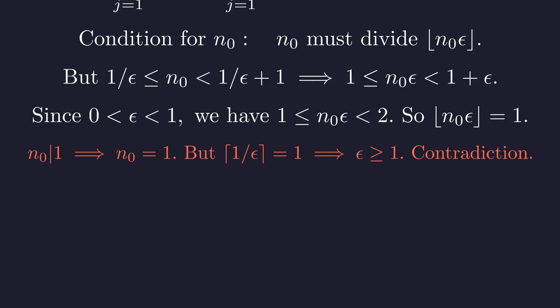The condition n sub 0 must divide one forces n sub 0 to be 1. But for the ceiling of 1 over epsilon to be 1, epsilon would have to be greater than or equal to 1. This contradicts epsilon being a fractional part. This is a solid contradiction. No irrational solutions exist.